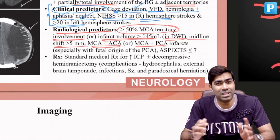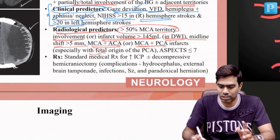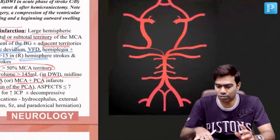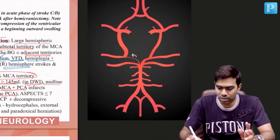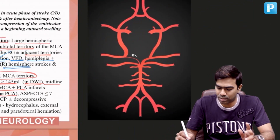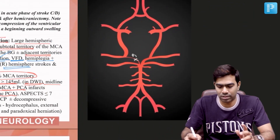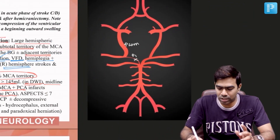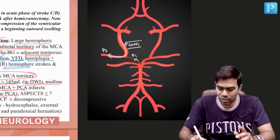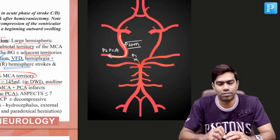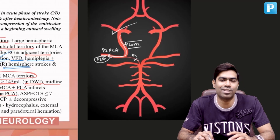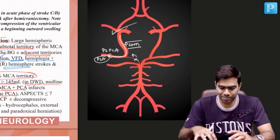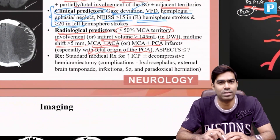MCA and PCA combined infarcts typically occur in patients with a fetal origin of the PCA. In fetal PCA origin, the P1 segment of the PCA is hypoplastic, but the posterior communicating artery is more prominent and supplies blood to the P2 PCA. This means the PCA is essentially part of the anterior circulation rather than the posterior circulation — this is what we refer to as fetal origin of PCA.